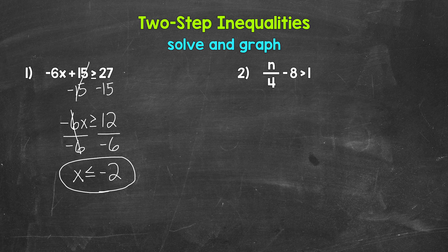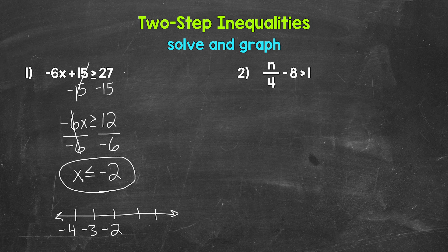Now let's graph that answer on a number line. Remember, a filled circle means we are including the number, and an open circle means we are not including the number. We'll put negative two with a couple of numbers on both sides: negative four, negative three, negative two, negative one, zero. Since X is less than or equal to negative two, negative two is included — we need a filled circle. We need all values less than negative two represented, so we need an arrow going left. And that's our graph.